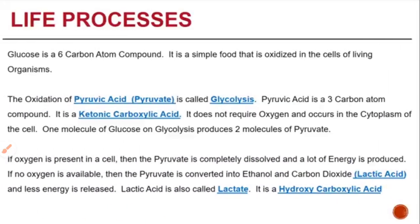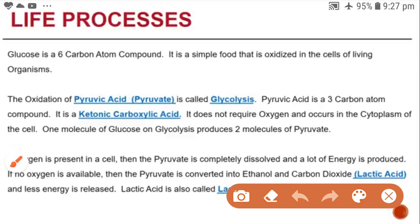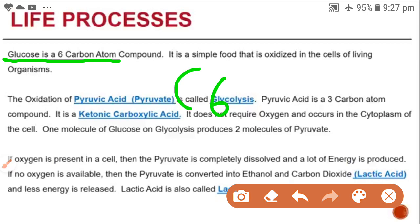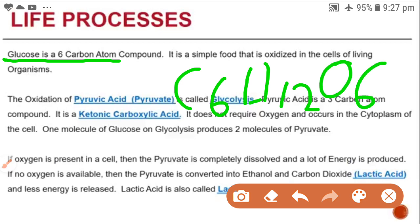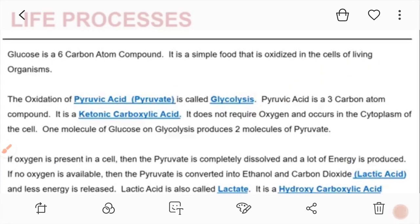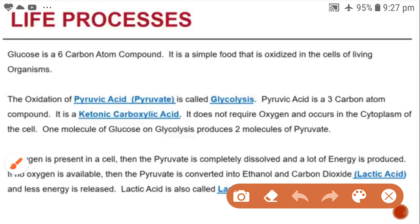Glucose is a six-carbon compound — C6H12O6. It is a simple food that is oxidized in the cells of living organisms.